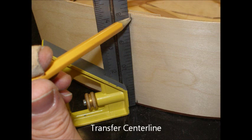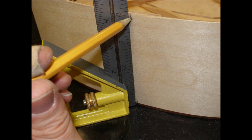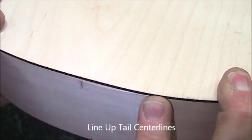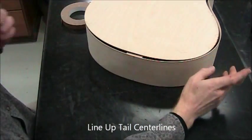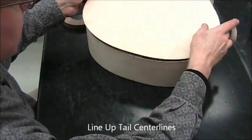First step is to transfer the center line. If you look closely at the tail end of the top, you'll see a small center line. Move that up to the top of the siding and line that up with the same center line on the back. That'll help the rest of the process go smoothly.